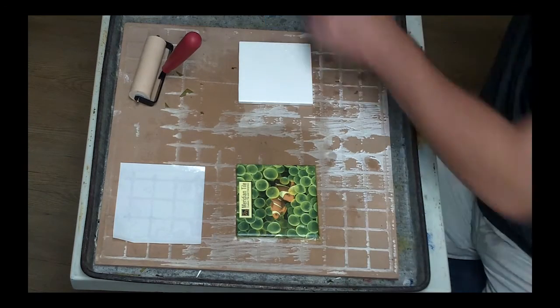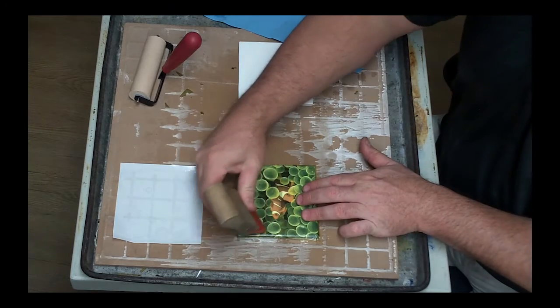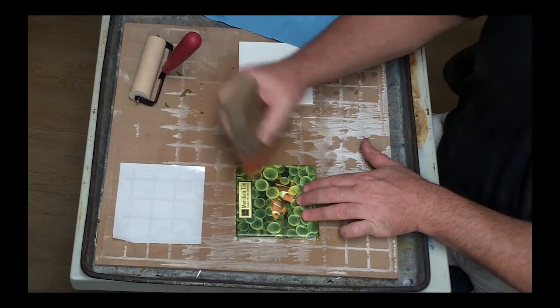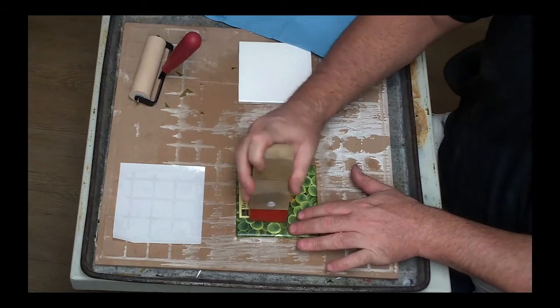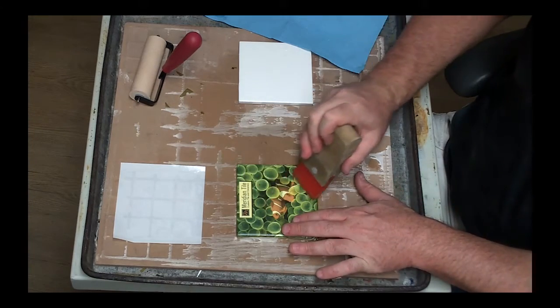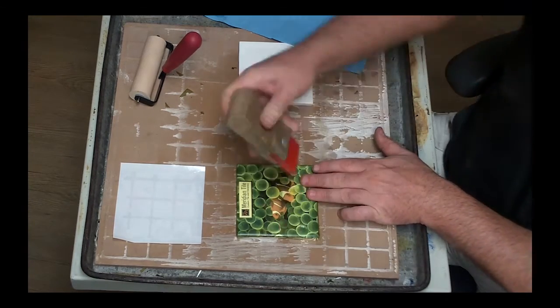Next we're going to take a squeegee and we're going to do a little bit more pressing. This is going to make sure there's no water, no air. You want to be sure to get all the air and water out. This will make sure there's no burnouts on it. It'll make sure the decal fires into the tile with no problem.